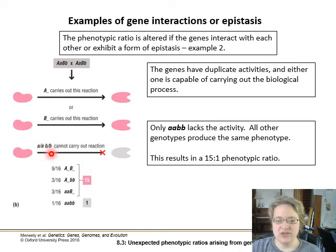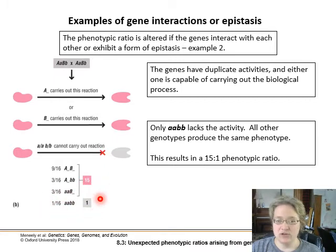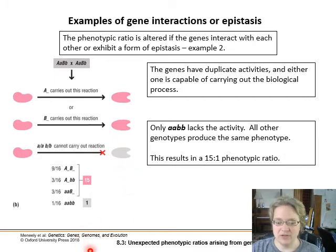If for some reason we have neither of these genes — both have recessive non-functional alleles — they can't carry out the reaction at all. There are 15 out of 16 offspring of that particular cross that will be able to carry out the pathway function. Only 1 out of 16 — the fully homozygous recessive — cannot carry it out. This gives a 15:1 phenotypic ratio. Like the other example, we have two outcomes: does the process work, yes or no, but the ratios differ.